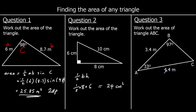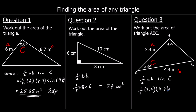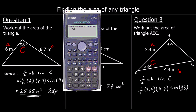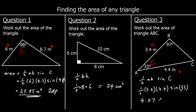And the last one. We're using half AB sine C, looking for two lengths and an angle between them. The angle is 33, and the two lengths are 3.4 and 4.4. So it's half times 3.4 times 4.4 sine 33. Typing that into the calculator: half times 3.4 times 4.4 sine 33 gives 4.07 — meters squared to two decimal places.